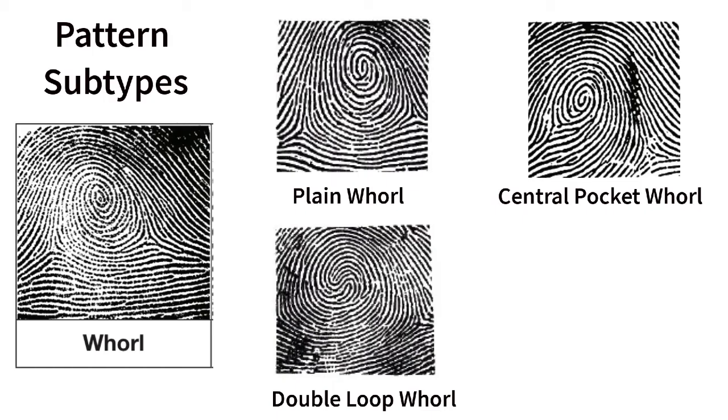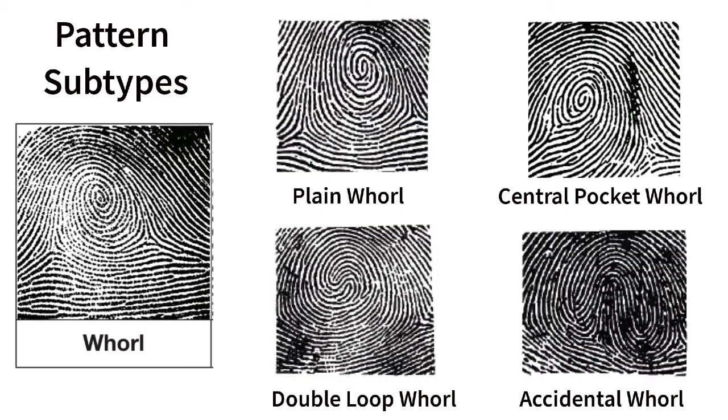A double loop whorl is not a true whorl. Instead, it is two loops that together appear to make a whorl pattern. An accidental whorl is made of two different fingerprint patterns combined. In this example, you can find an arch and loops have combined to make a whorl-like pattern.